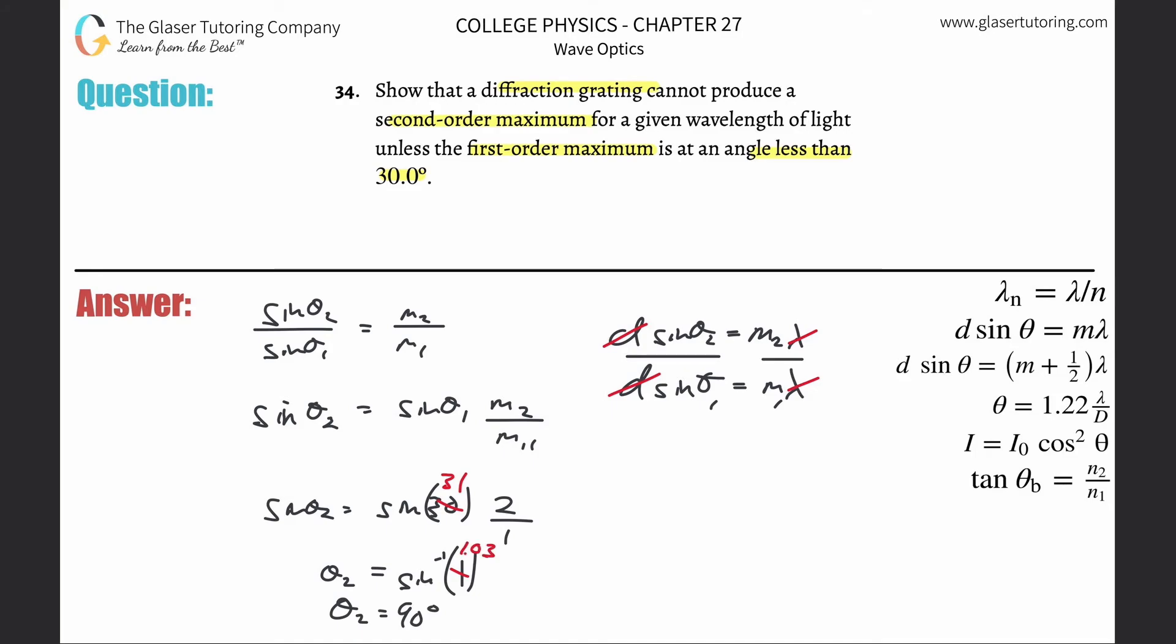Now inverse sine that. Inverse sine of 1.03. Error domain? Well, that's the whole point. The inverse sine, you can never plug in a value larger than 1 here.